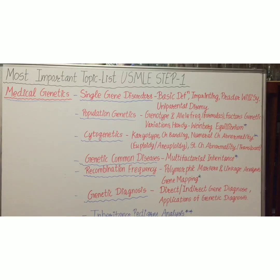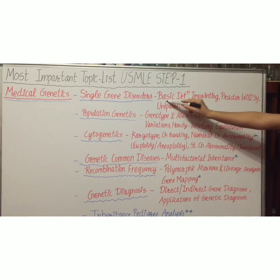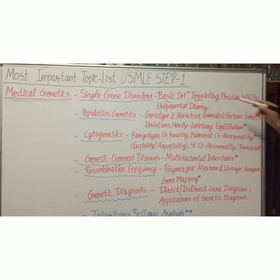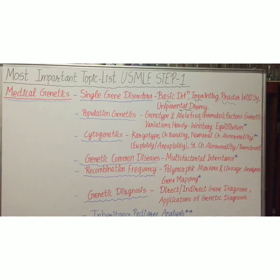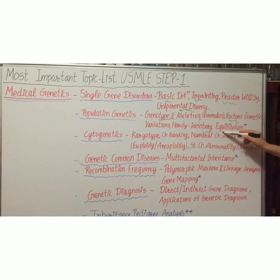Let's start with medical genetics. The first topic is single gene disorders. Subtopics include basic definitions, imprinting, Prader-Willi syndrome, and uniparental disomy. The next topic is population genetics, with subtopics covering genotype and allele frequency formulas, factors of genetic variation, and Hardy-Weinberg equilibrium.